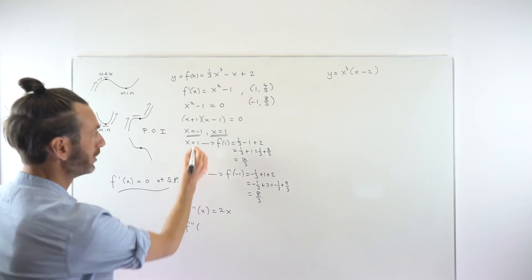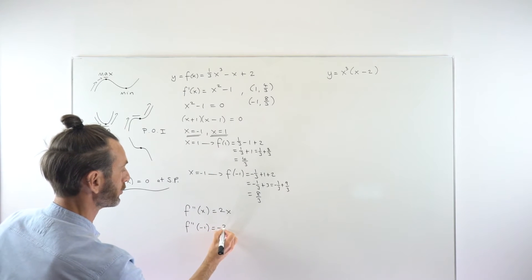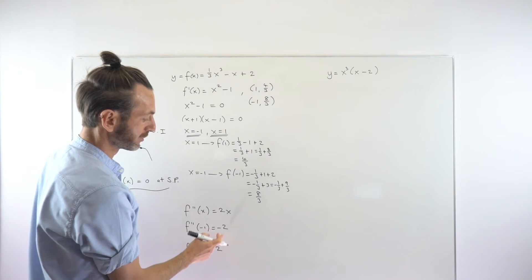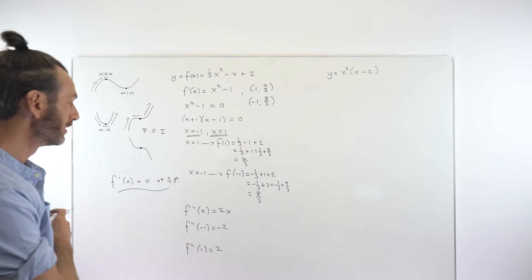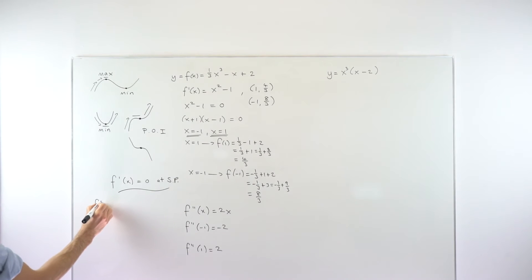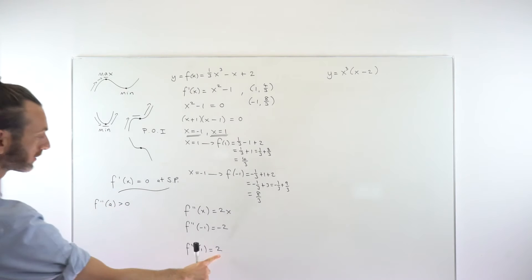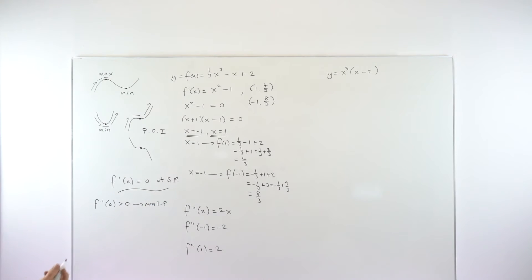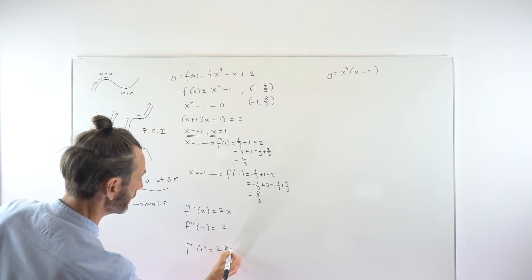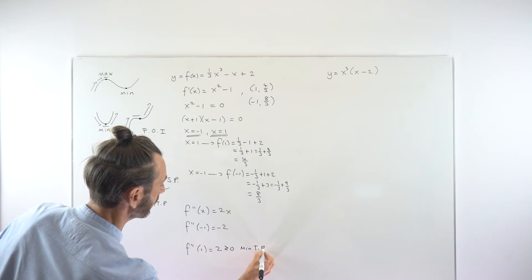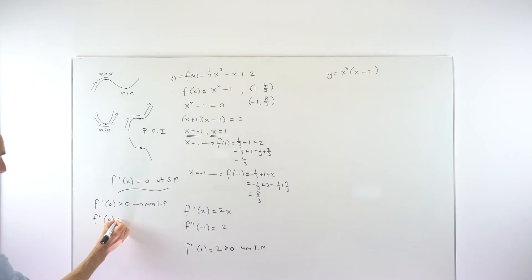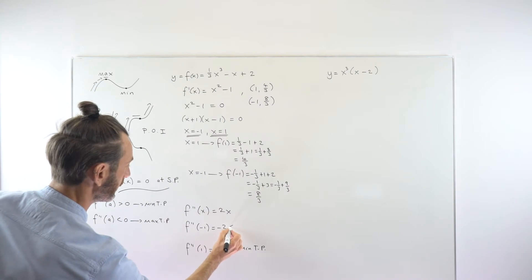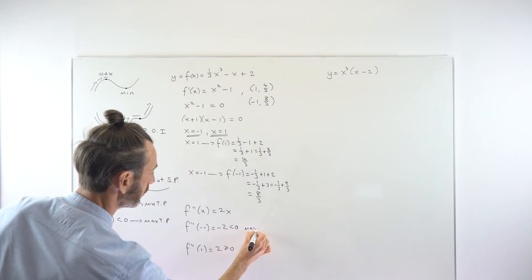f″(−1) = 2 × (−1) = −2, and f″(1) = 2 × 1 = +2. The rules are: if the second derivative at a point is greater than zero, it's a minimum turning point; if it's less than zero, it's a maximum turning point. Notice these seem contradictory — negative gives a max, positive gives a min. So f″(−1) = −2 means a maximum, and f″(1) = +2 means a minimum.